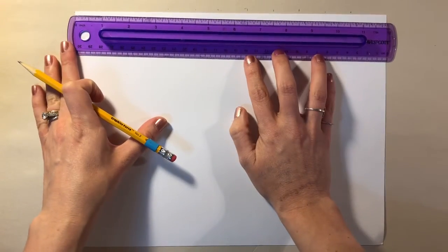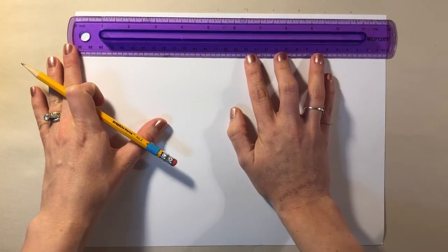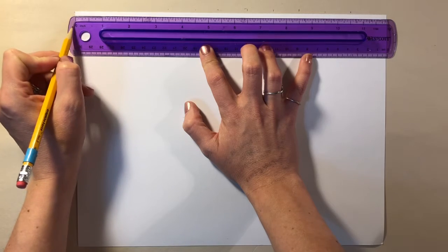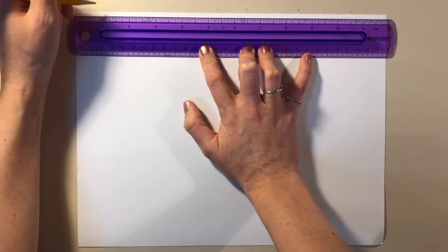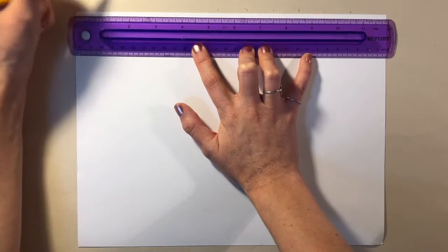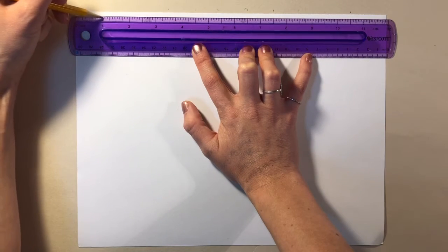Line the zero up with the edge of my piece of paper, and at every one-inch increment I'm going to put a little vertical tick mark. So where the one is, two, and so on all the way down the page at each inch.